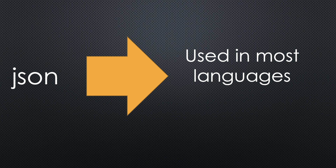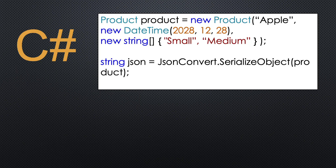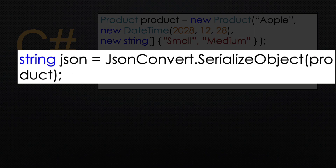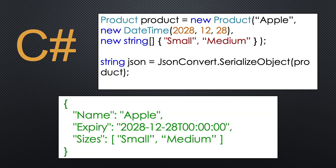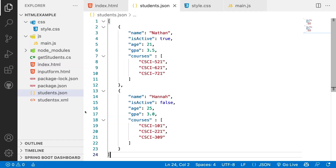JSON is so important that it's a prerequisite that you need to know for pretty much every type of programming language. For example, here in C Sharp, you can see that there is a convert statement to serialize an object. So we take a product, which is going to be turned into a JSON statement, showing that we can now transfer this to any language, whether C Sharp, JavaScript, or anything else.